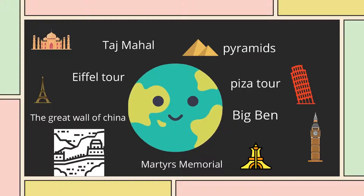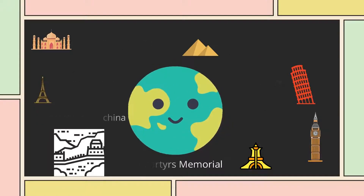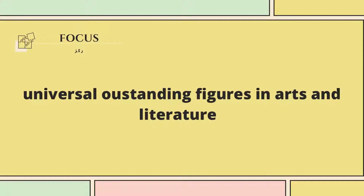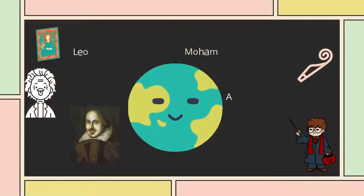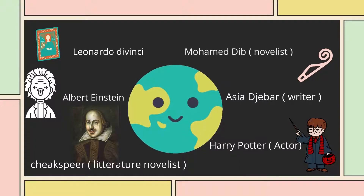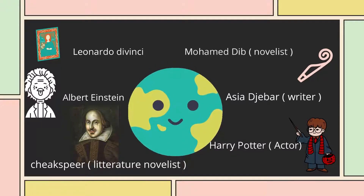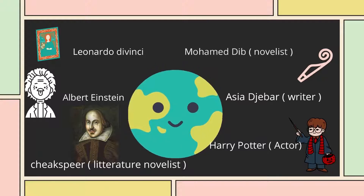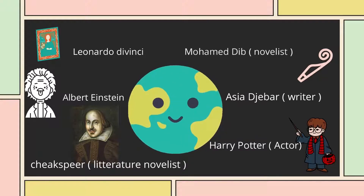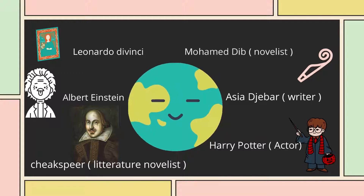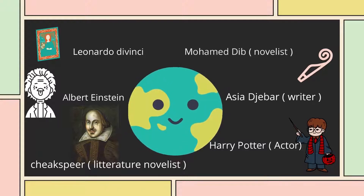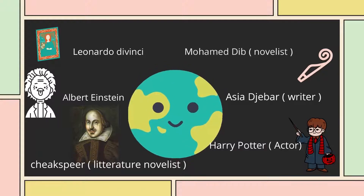Universal Outstanding Figures in Art and Literature: Shakespeare, the novelist Assia Djebar, the writer, Harry Potter, an actor, Albert Einstein, a scientist, Leonardo Da Vinci, a painter, and Mohamed Dib, a novelist.